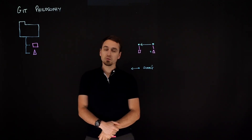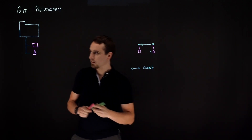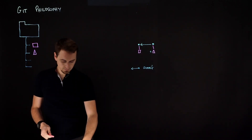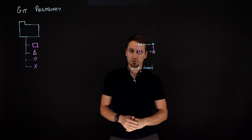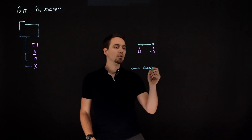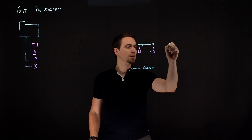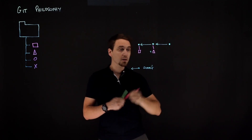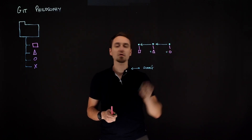The point of Git is to be able to develop large projects with many people. Let's say I need to add both a circle and a cross — that's too much work for me alone. So I'm going to ask Bob to come in and help. Bob works, and once he's done he commits this new information — the circle. Because Git is smart, it only stores the circle, so it says plus circle.